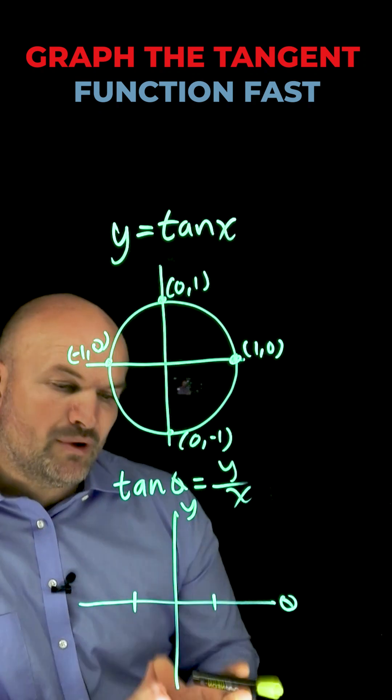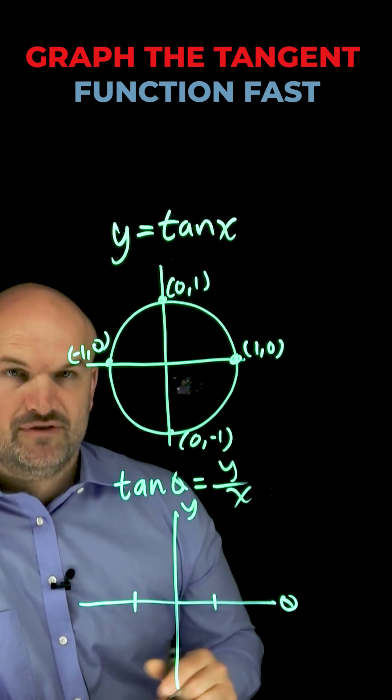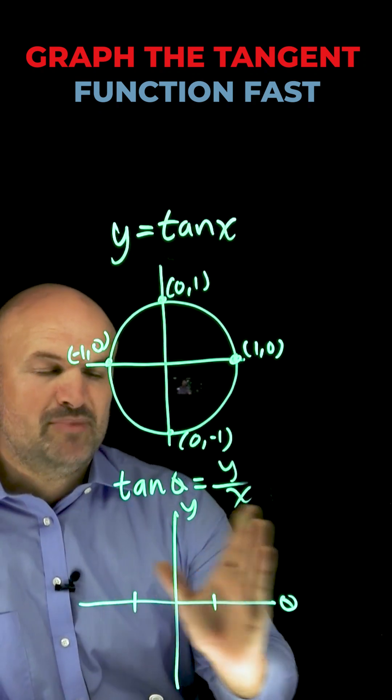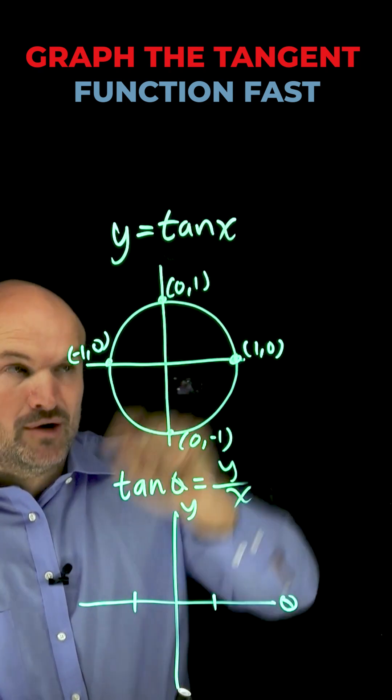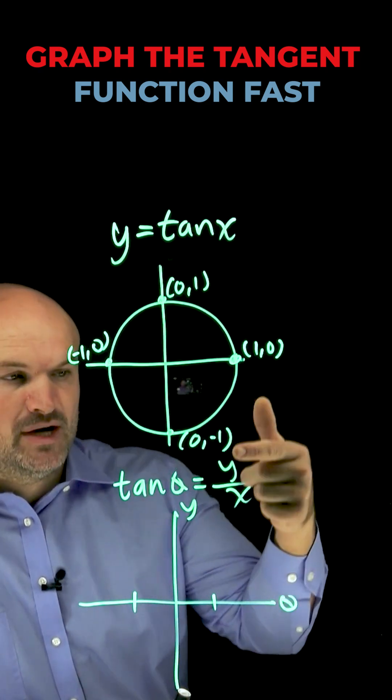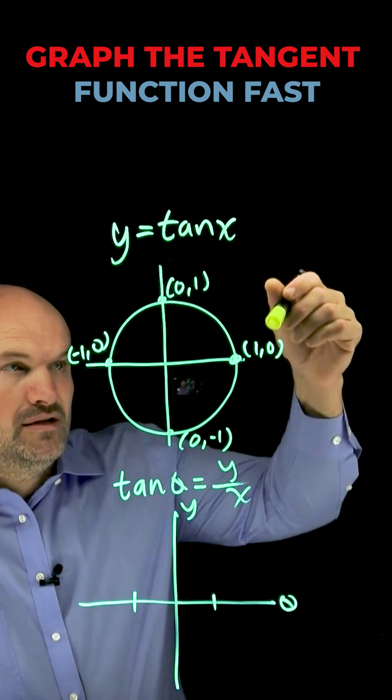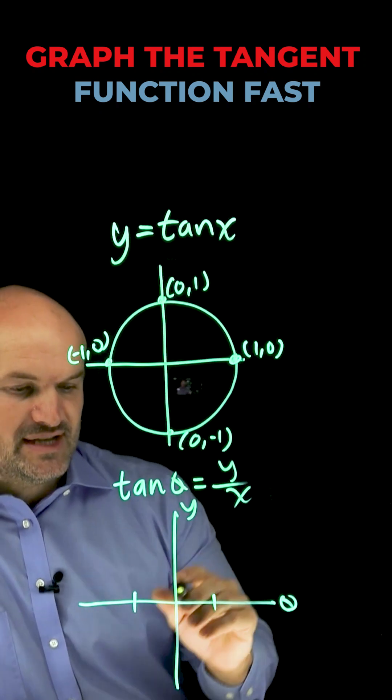When graphing the initial period of the tangent function, we're going to use some positive angles as well as some negative angles. Let's start with the easiest angle at zero. We're looking for the relationship of y over x coordinates. Zero over one gives us zero.